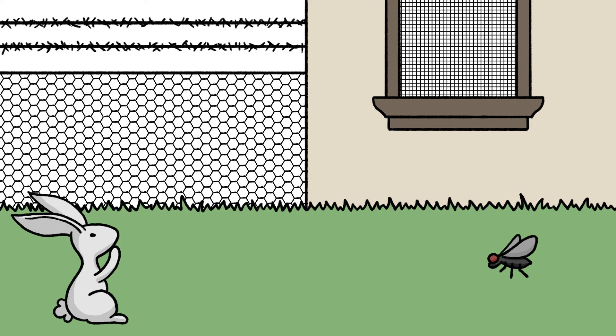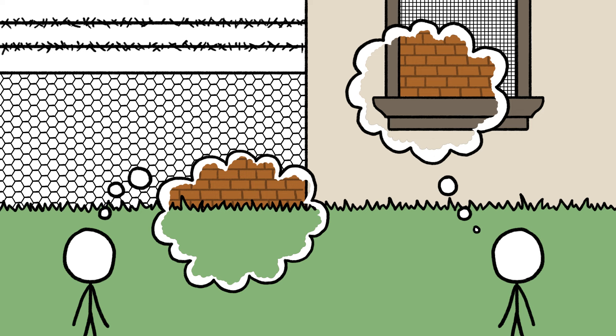If we looked at these fences from a fly's or a rabbit's perspective, we might have realized that these barriers weren't barriers at all. But our human-centric view of the world makes it hard to put ourselves in another animal's shoes, or paws, or wings, or exoskeleton.